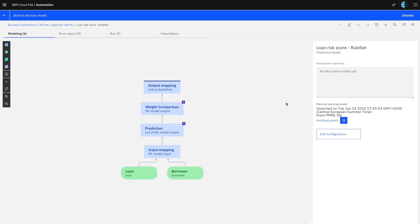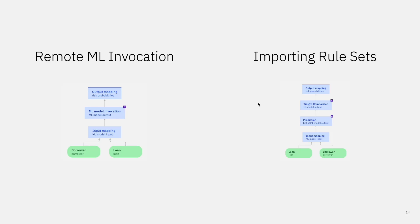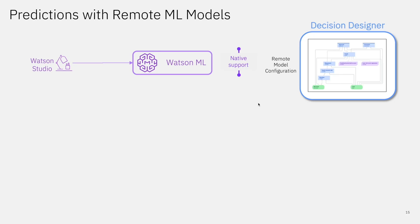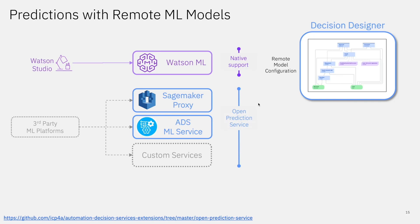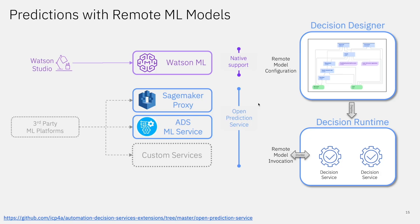Those are the two approaches for predictions in our 2022 release of Automation Decision Services. Let's contrast them and summarize some of the details. For the remote ML invocation, we have native support for Watson Machine Learning, meaning we can configure and invoke Watson Machine Learning remotely. For all other ML platforms, we have an open prediction service — an open API through which you can connect to different types of ML services on the market. You configure that in ADS Designer at design time, and when you deploy and run a decision service, it will automatically do a remote invocation of the ML model, either to Watson ML or through the open prediction service interface.